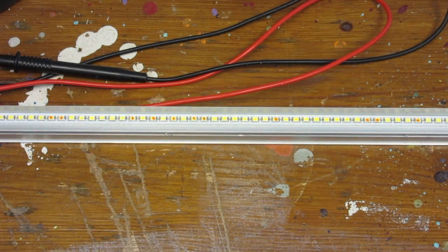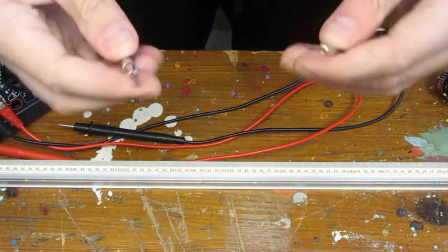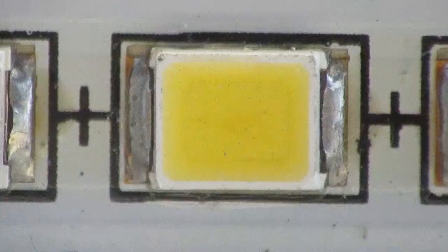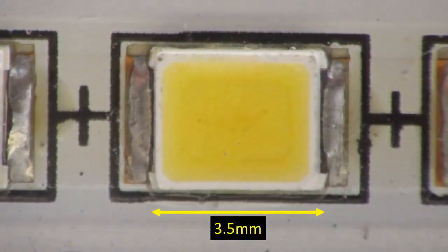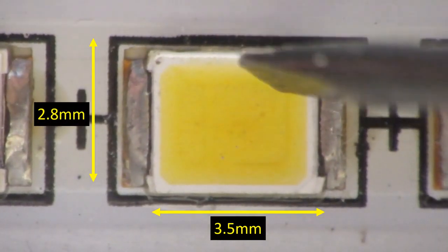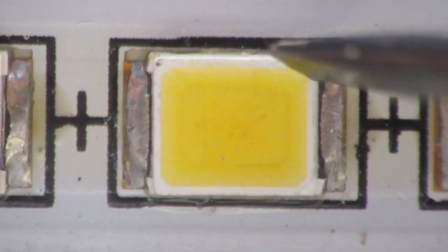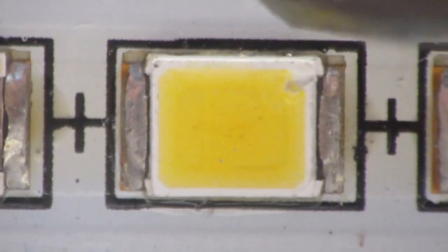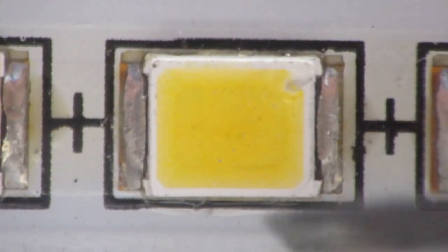Before getting started, just to get a sense of the size we are dealing with. The LED is 3.5mm long and 2.8mm wide. I have a camera placed in front of it and during the complete operation, I can almost see nothing of what I'm doing. This should be fun.